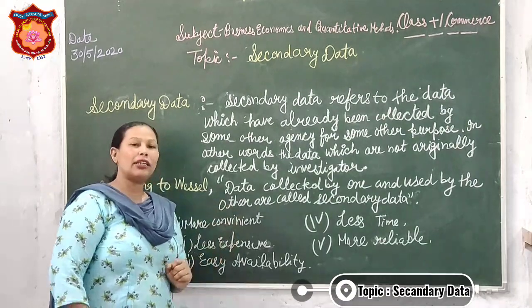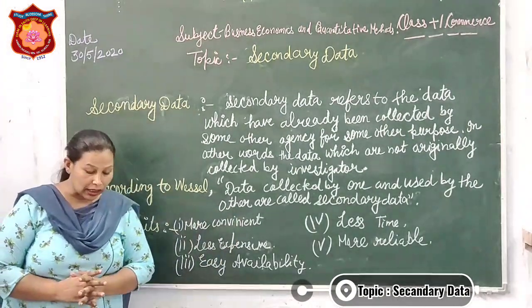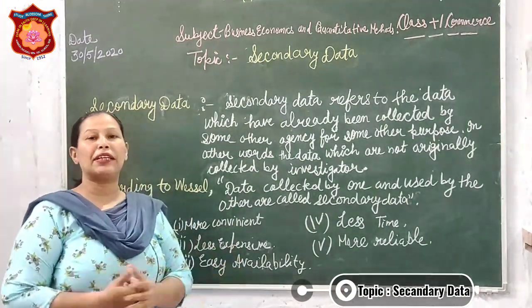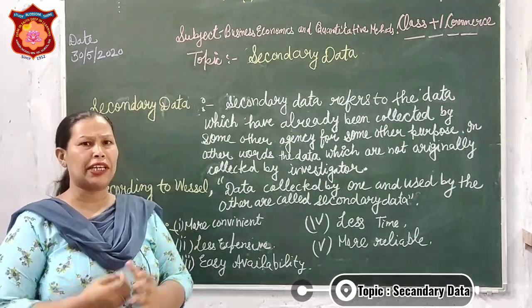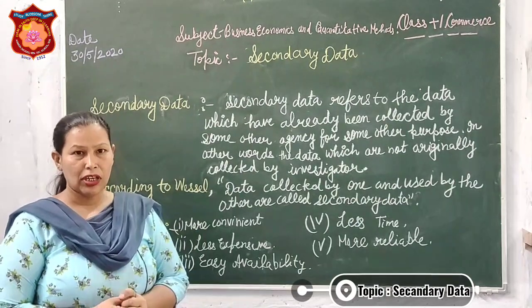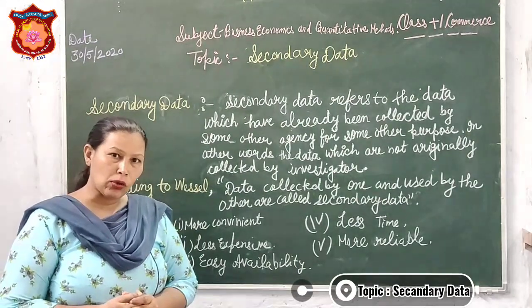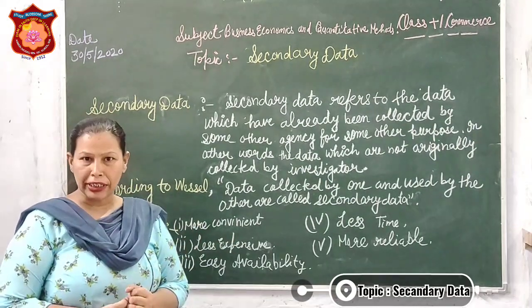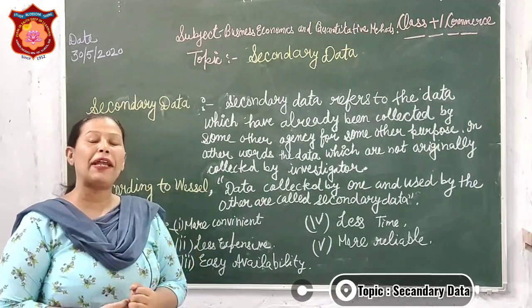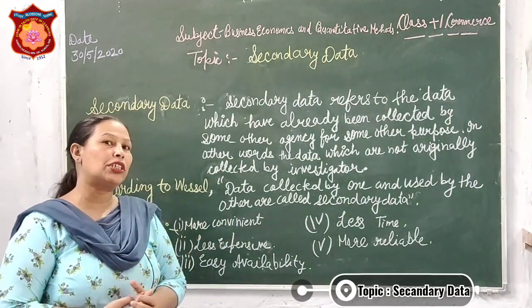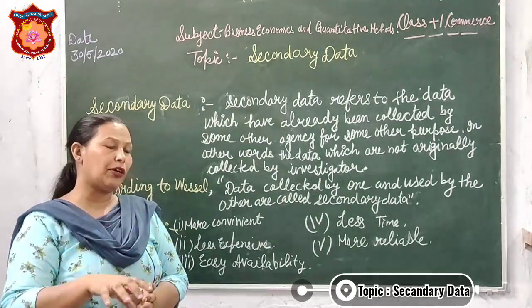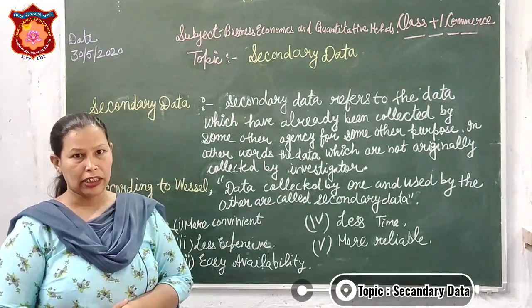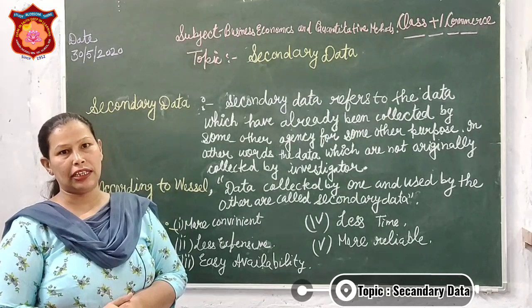For example, kisi person ne investigation karni hai kisi chiz ke regarding. Voh kya karta hai — internet ke through, koi bhi print media ke through, jo bhi data pahle kisi ka used kiya huwa pada hai, usi se related, woh usi se investigation kar leta hai. Isko kehte hain secondary data.